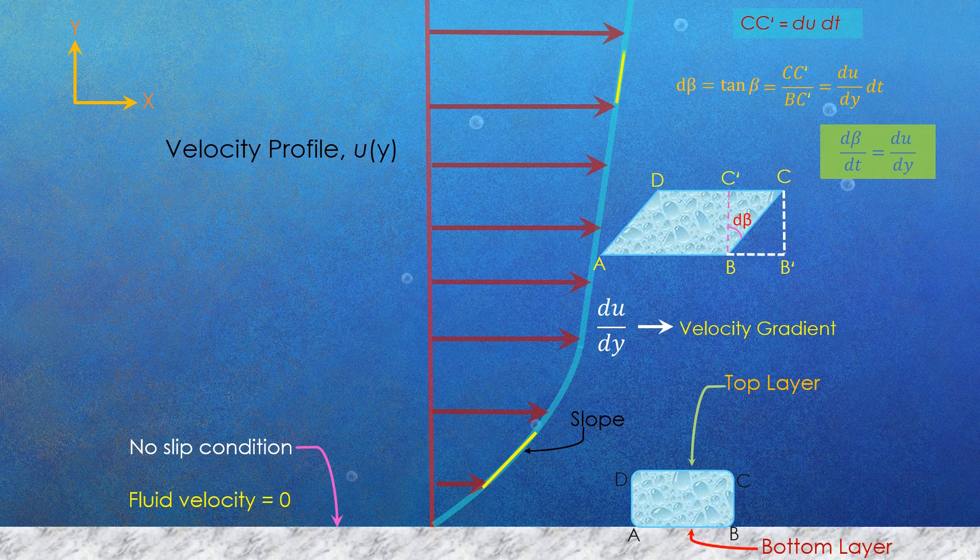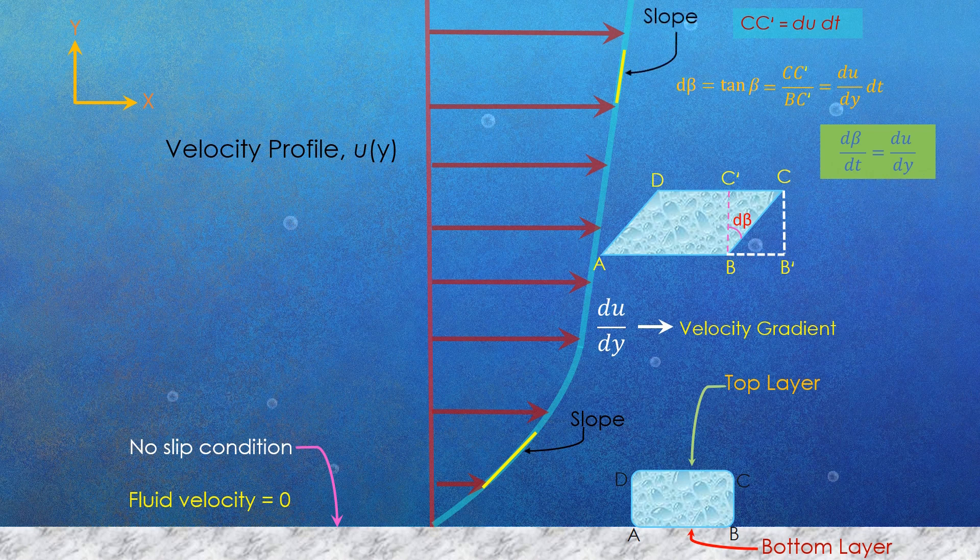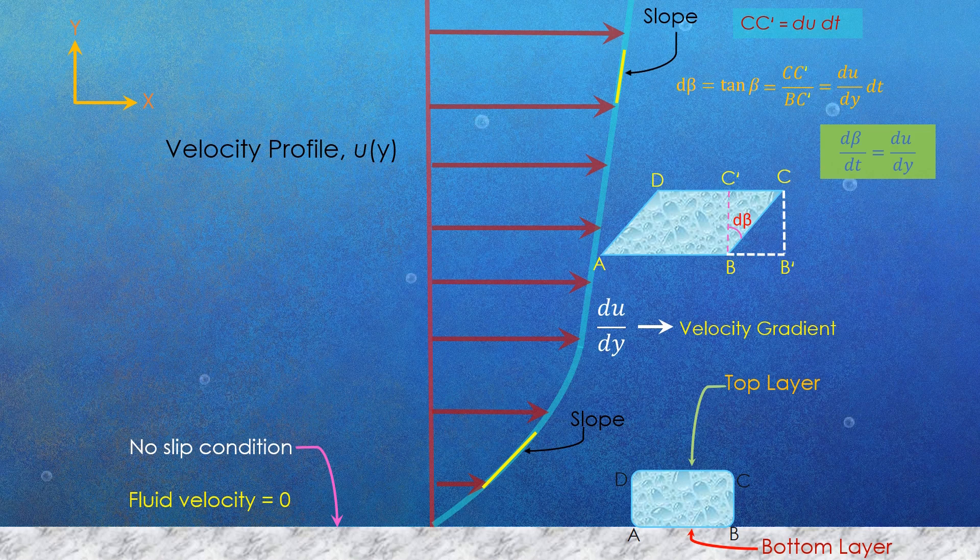but far from the plate surface the slope is less as fluid velocity is not changing much, causing low shear stress between the fluid layers.